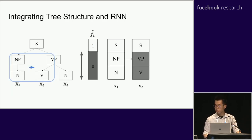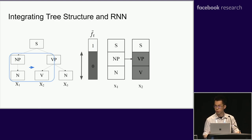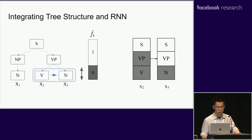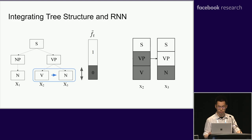Suppose we have the tree structure on the left and we are currently reading the second word X2. We need to erase all neurons up to the second level of hierarchy and then write new information into them, while preserving the information in the third level for future use. We achieve this using a forget gate that is zero for the first two chunks and one for the last chunk. At time step three, we only erase the first chunk, so the forget gate is zero for the first chunk and one for the rest. We can use the number of zeros in the forget gate to parse the sentence, as I will explain in the experiment section.